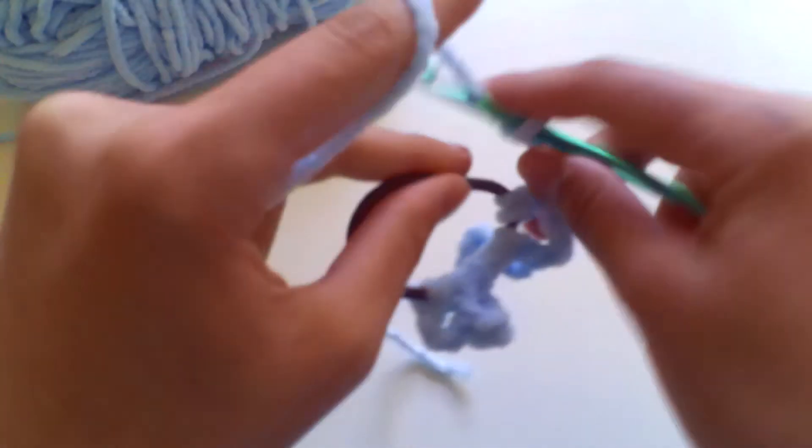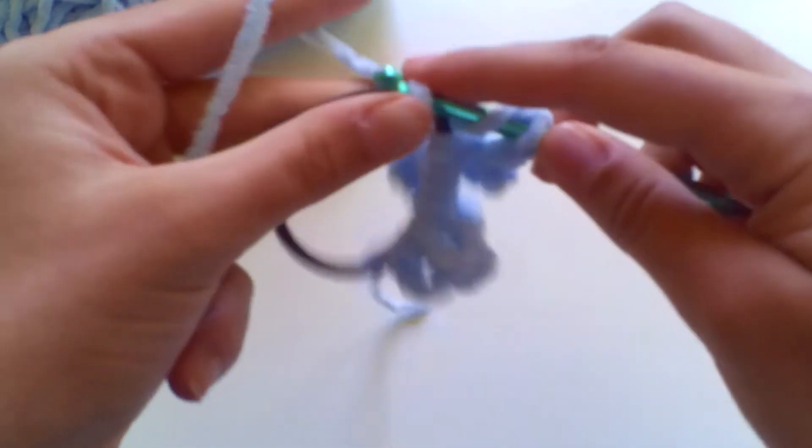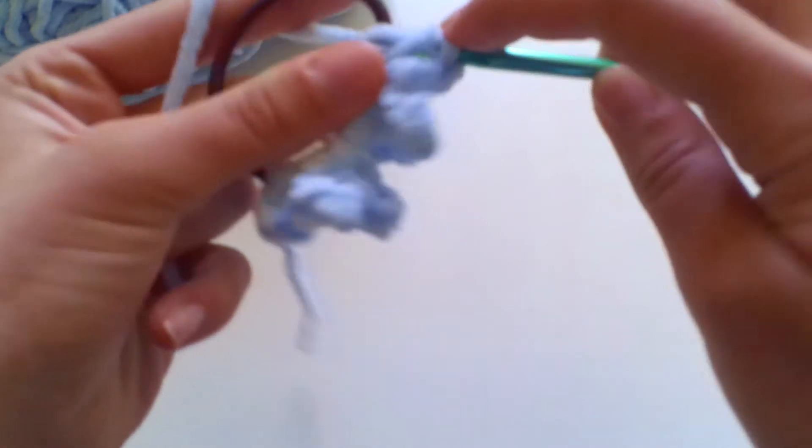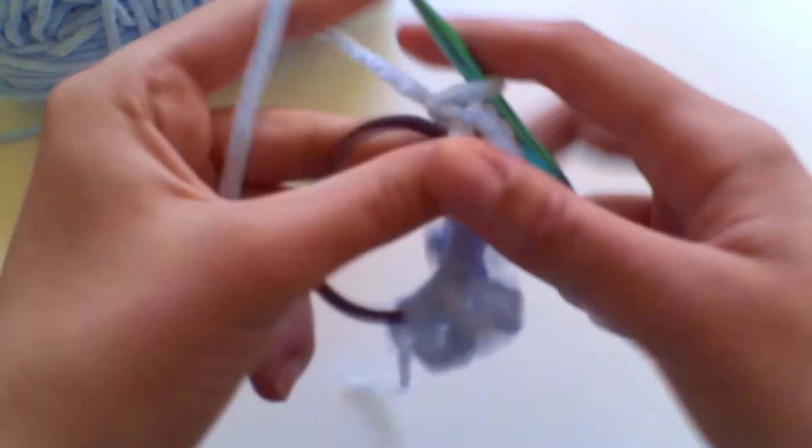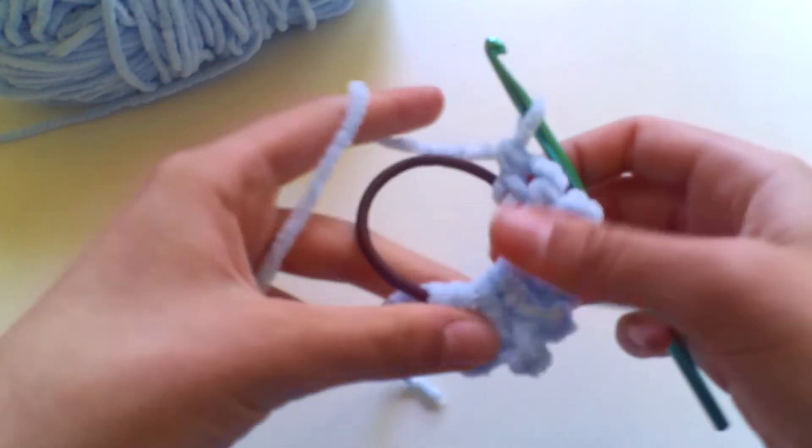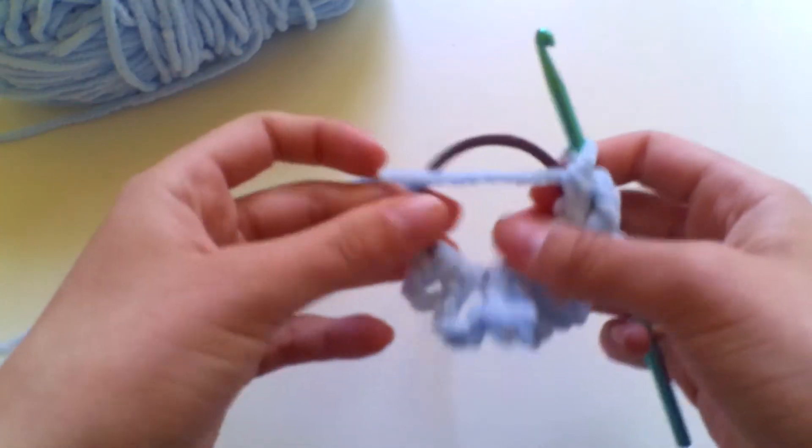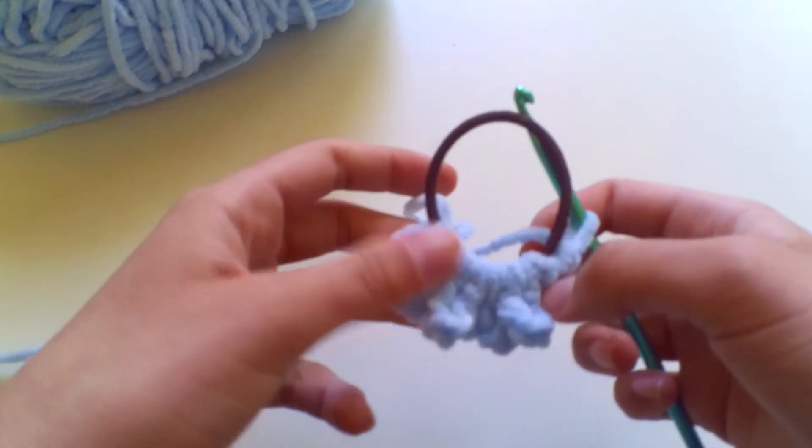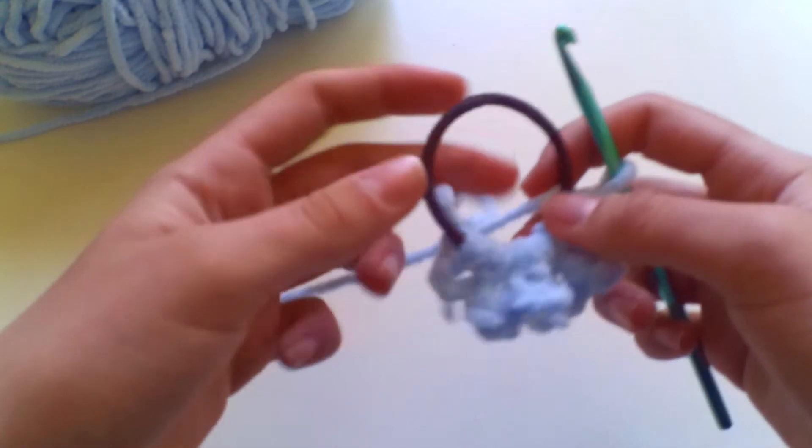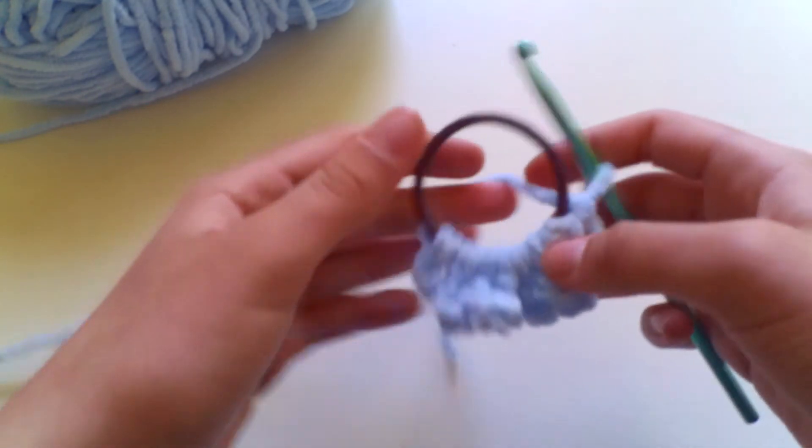It's totally up to you for your preference but because this is super easy and super simple you're just going to repeat this until you cover the bobble. So I am just going to repeat this the whole way around until I feel happy with my scrunchie look and then I will meet back when I have finished that.